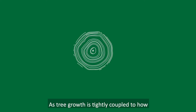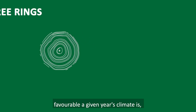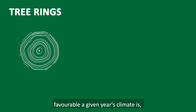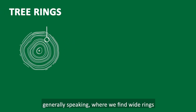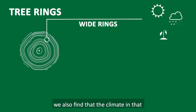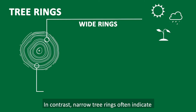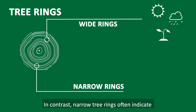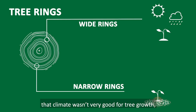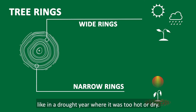As tree growth is tightly coupled to how favourable a given year's climate is, generally speaking, where we find wide rings, we also find that the climate in that same year was good for tree growth. In contrast, narrow rings often indicate that climate wasn't very good for tree growth, like in a drought year where it was too hot or dry.